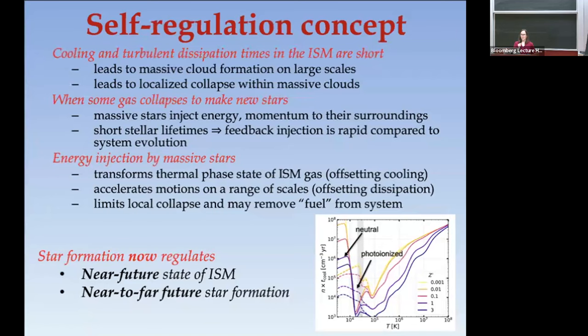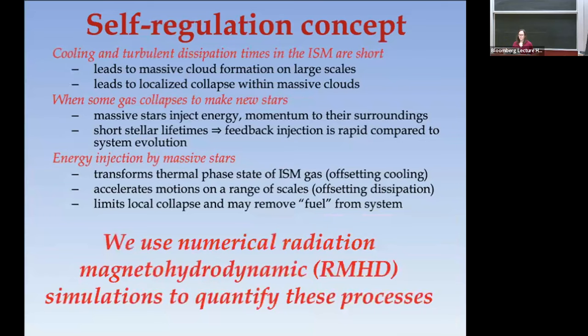What does the energy do? It transforms the thermal state, offsetting cooling; it accelerates the gas, offsetting turbulent dissipation; and together those can limit local collapse and remove fuel from some range of scales. That means star formation can regulate the near-future state of the ISM and star formation over longer timescales. We use radiation MHD simulations to quantify this.